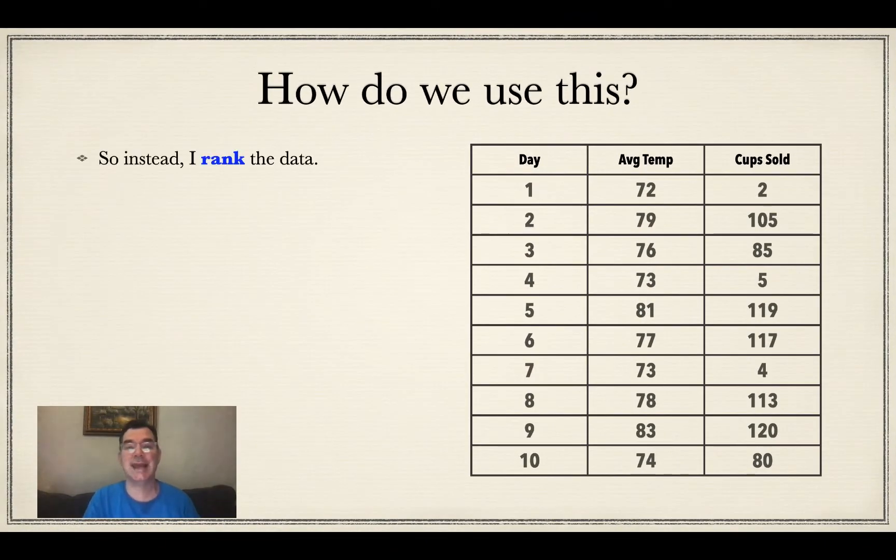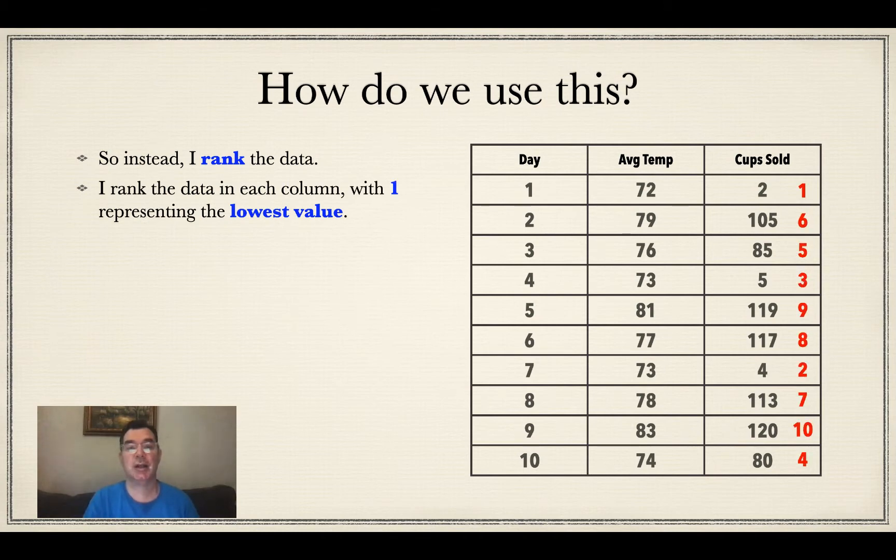So what I do instead is I rank the data, and all that means is that I go through each column and I replace the lowest value with the number one, and then the next lowest value with the number two, and so on. So I've done that with the number of cups sold first, and the reason for that is because something interesting is happening with the average temperature.